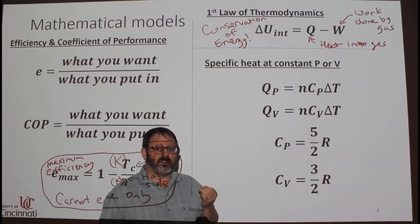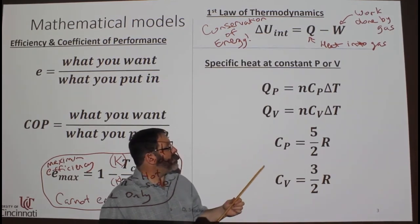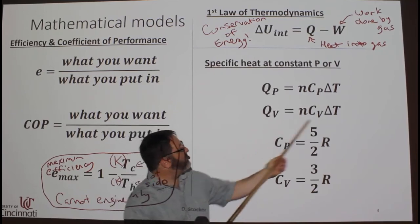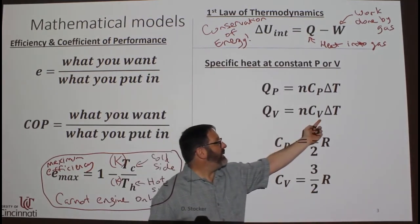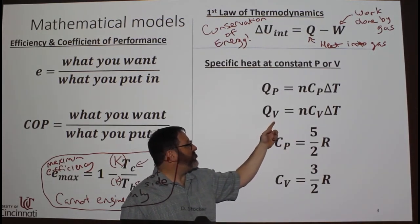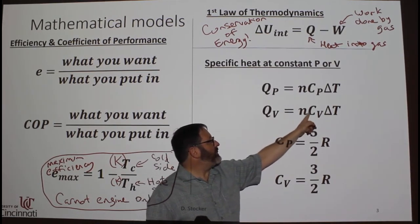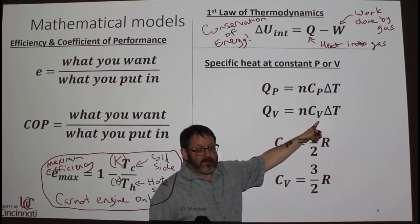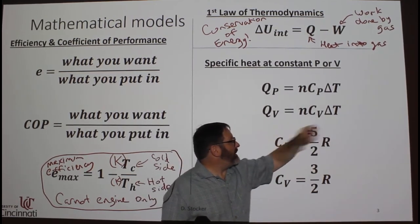If you use constant volume, so during the process the gas stays at the same volume, then it's exactly the same equation except with the V subscripts. So the heat put in at constant volume equals the number of moles times the specific heat at constant volume times change in temperature.